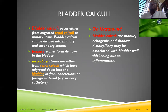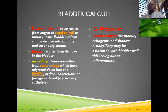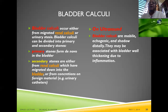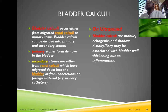Bladder calculi can occur from migrated renal calculi or form de novo. Primary stones form directly in the bladder; secondary stones either migrate from the kidneys or form as concretions on foreign materials such as urinary catheters. On ultrasound, bladder calculi are mobile, echogenic, and cast a posterior acoustic shadow. They may be associated with bladder wall thickening due to inflammation.